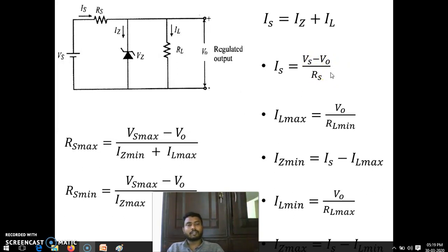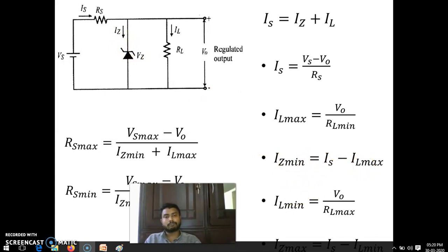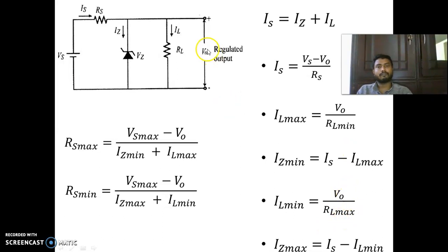The maximum load current IL maximum occurs when load resistance is minimum: IL max equals VF divided by RL min. IS minimum: when maximum IL is flowing, minimum value of IS flows through the diode, because IS is fixed. So IS minimum equals IS minus IL max. Then IL minimum occurs when RL is maximum, so minimum current flows: IL min equals VF divided by RL max. Corresponding IS maximum is IS minus IL minimum — when IL is minimum, maximum current flows through the zener diode.